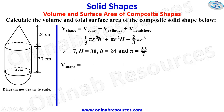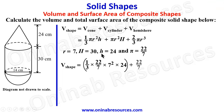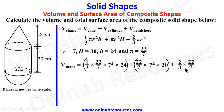To calculate the volume of the shape, we substitute: (1/3) × (22/7) × 7² × 24 for the cone, plus (22/7) × 7² × 30 for the cylindrical body, plus (2/3) × (22/7) × 7³ for the hemispherical base.